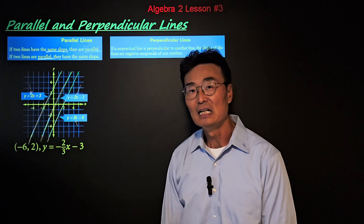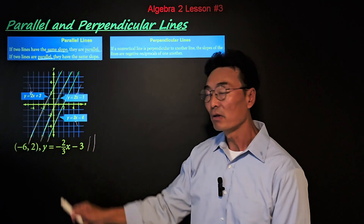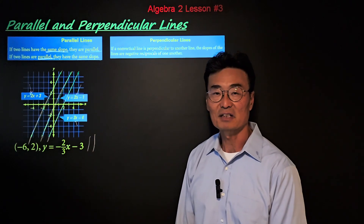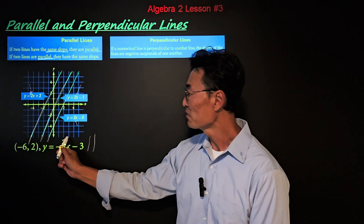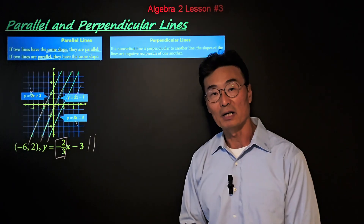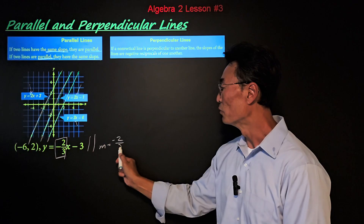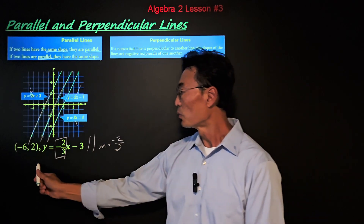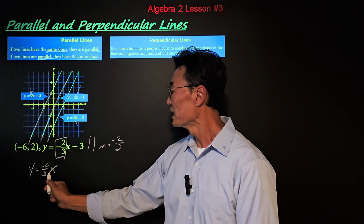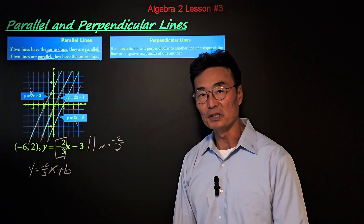Here's an example: given the equation y equals negative 2 over 3x minus 3, we want to find the equation of a line that's parallel to that line and contains the point negative 6 comma 2. Since the slope of the given line is negative 2 over 3, the parallel line will also have a slope of negative 2 over 3. So we begin by writing the equation y equals negative 2 over 3x plus b, where b is the y-intercept that we don't know yet.